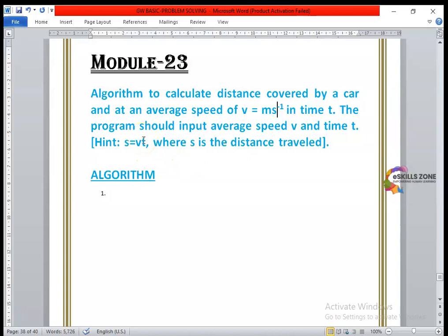S is used for distance, V is for speed, and T is the symbol used for time. S is the distance traveled. So we are going to write an algorithm.